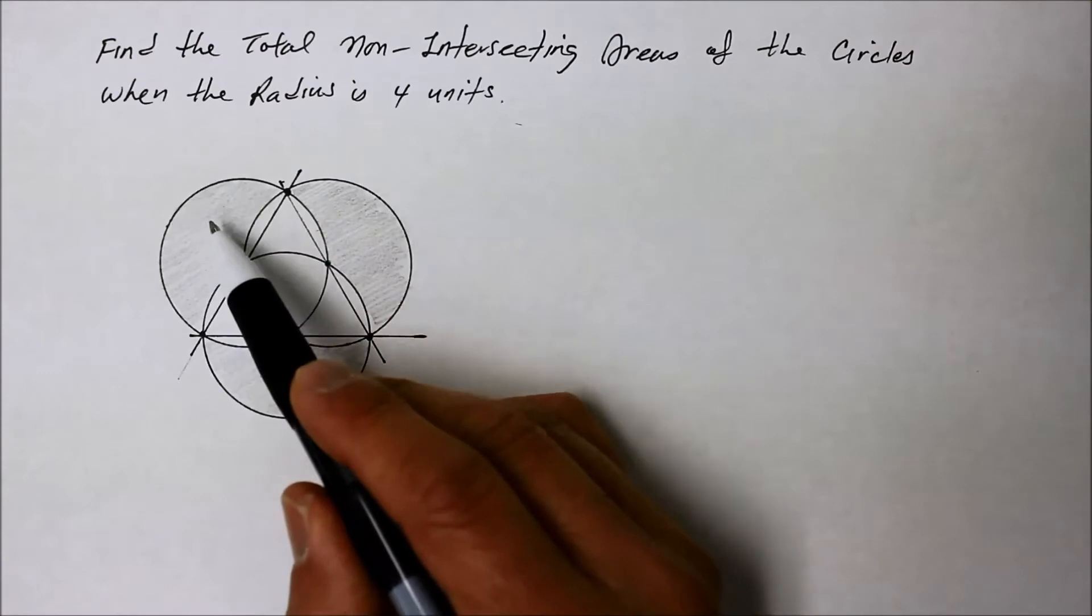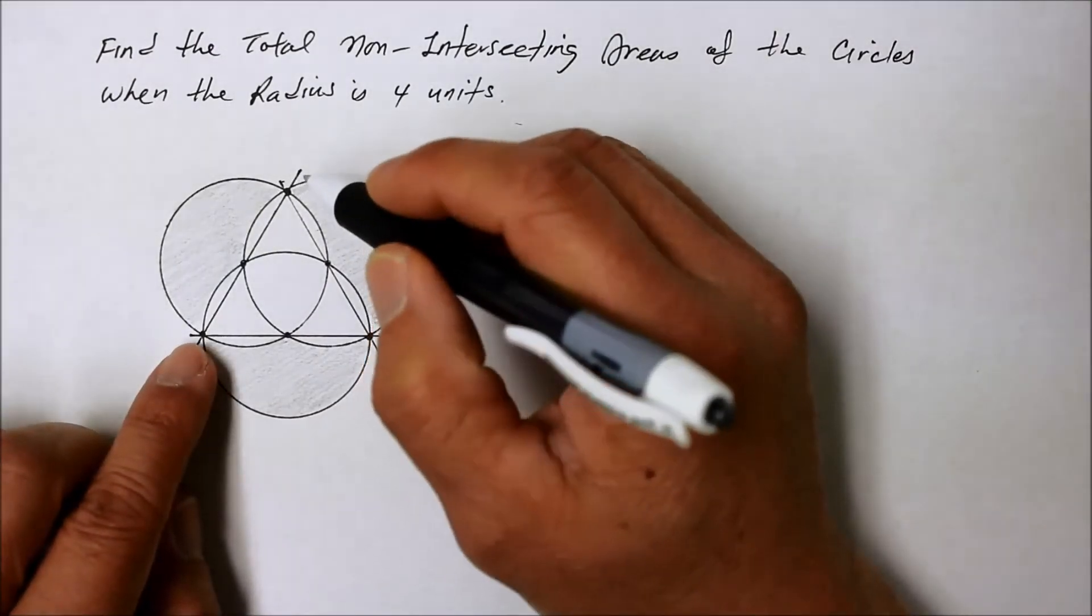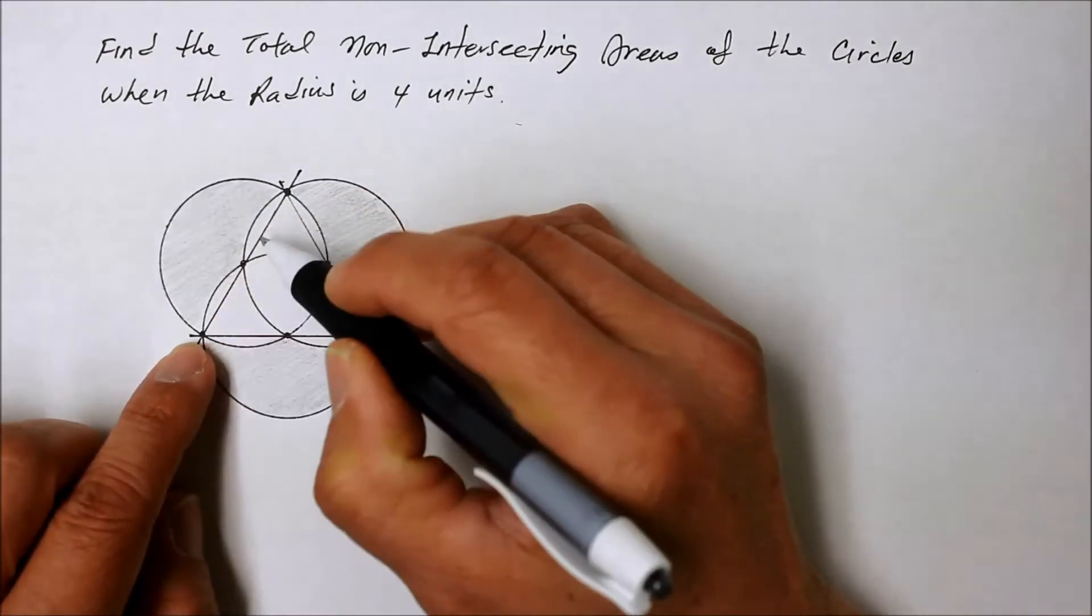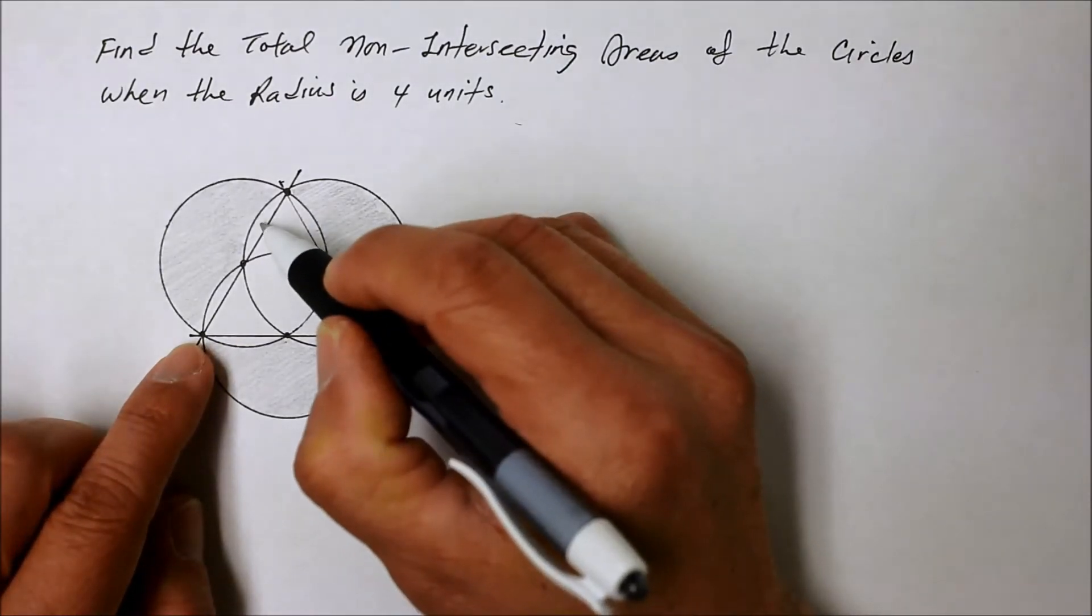So what you're trying to look for is the shaded region. And if you could see it closely here, what you actually have is a semi-circle. But you are going to have to take away the circular segment.